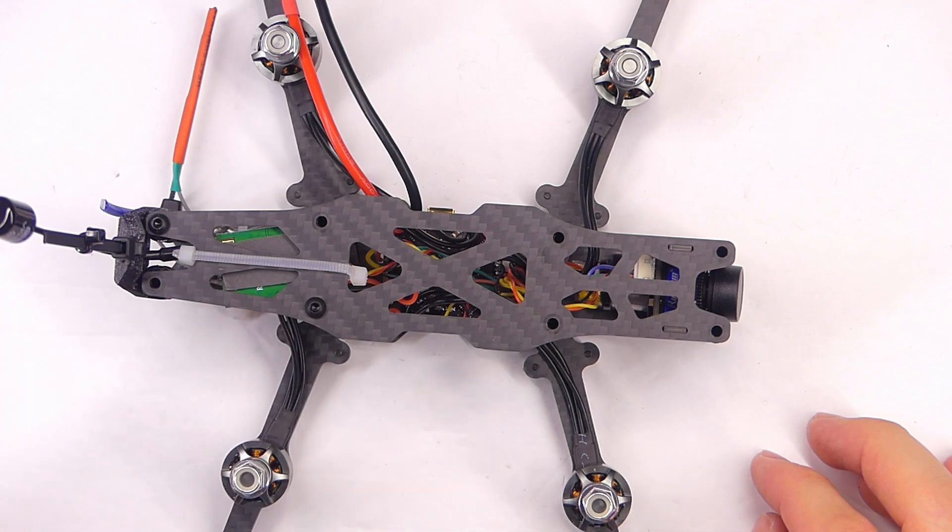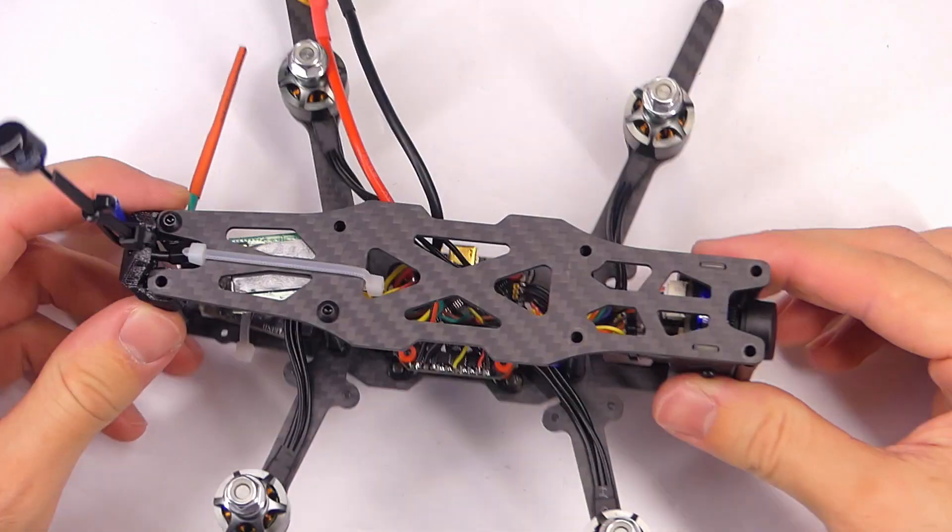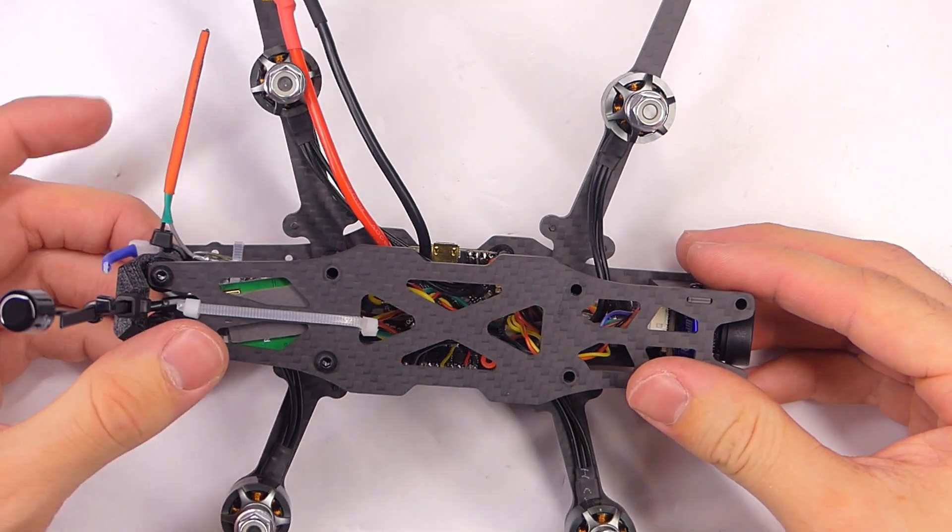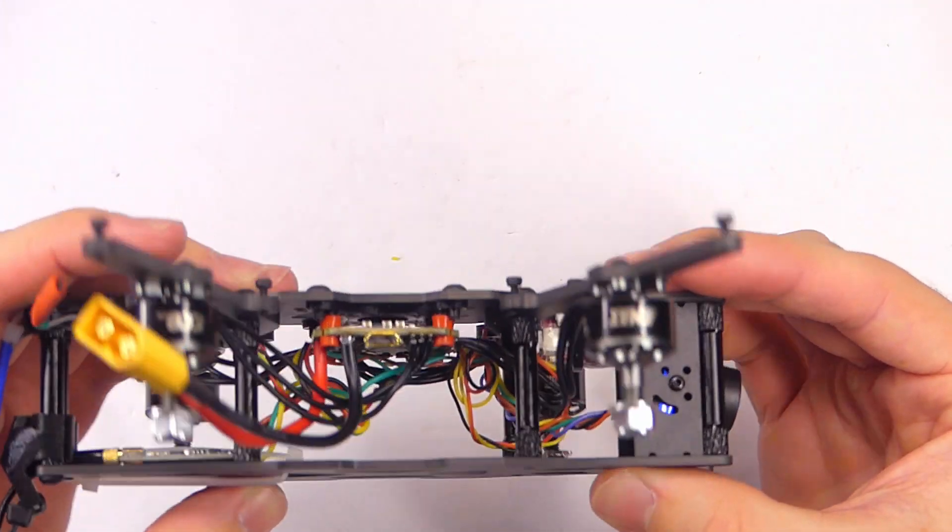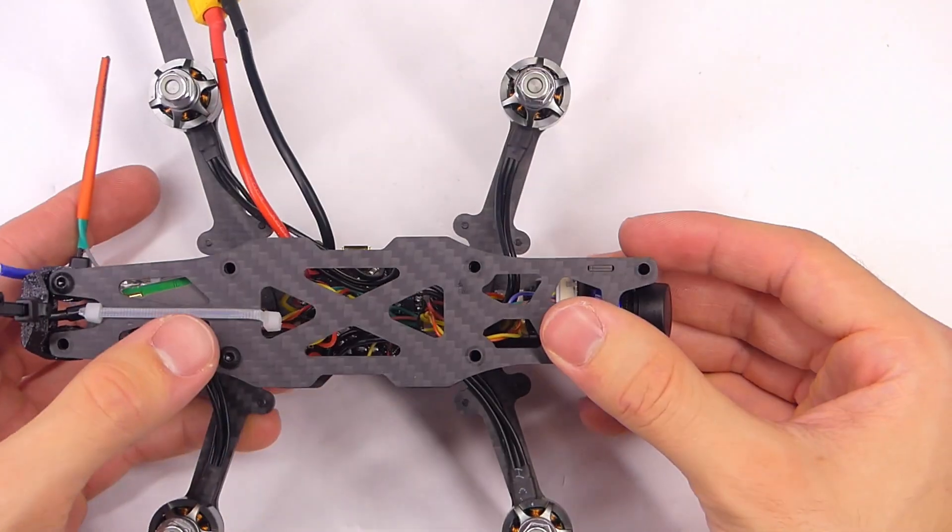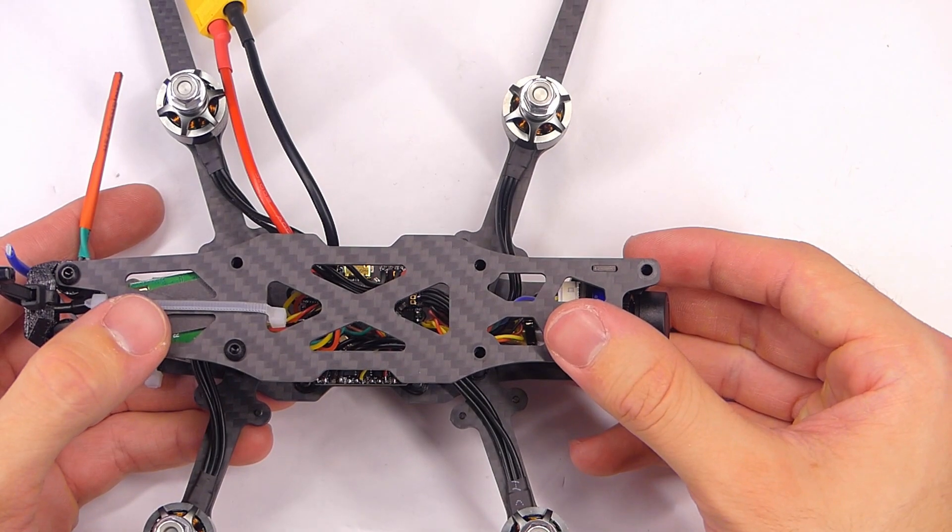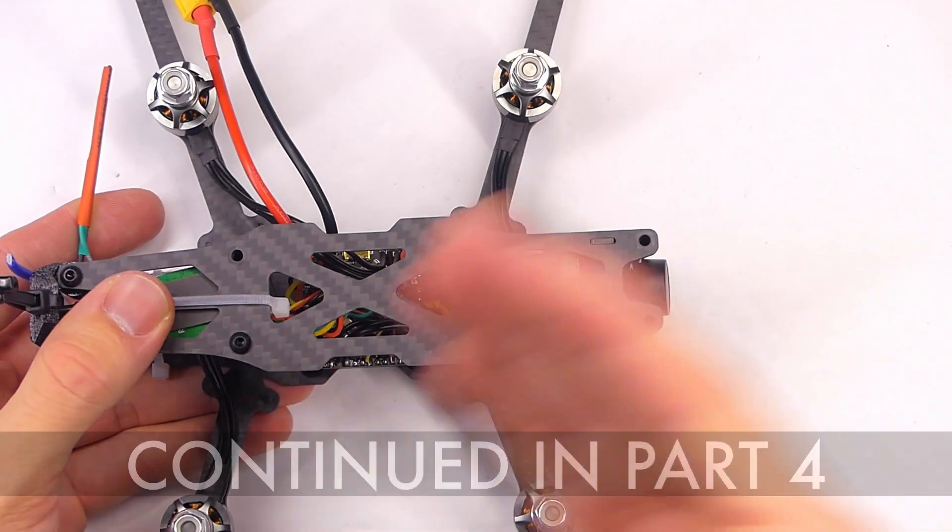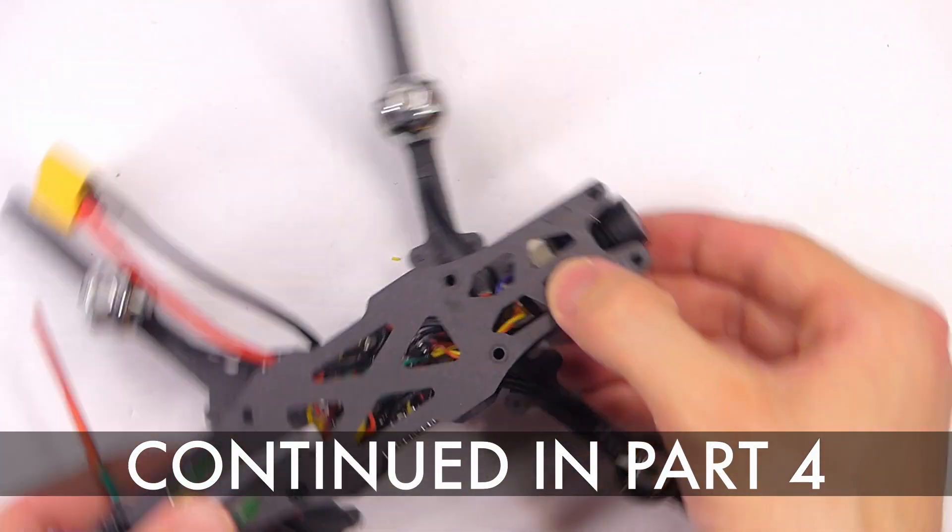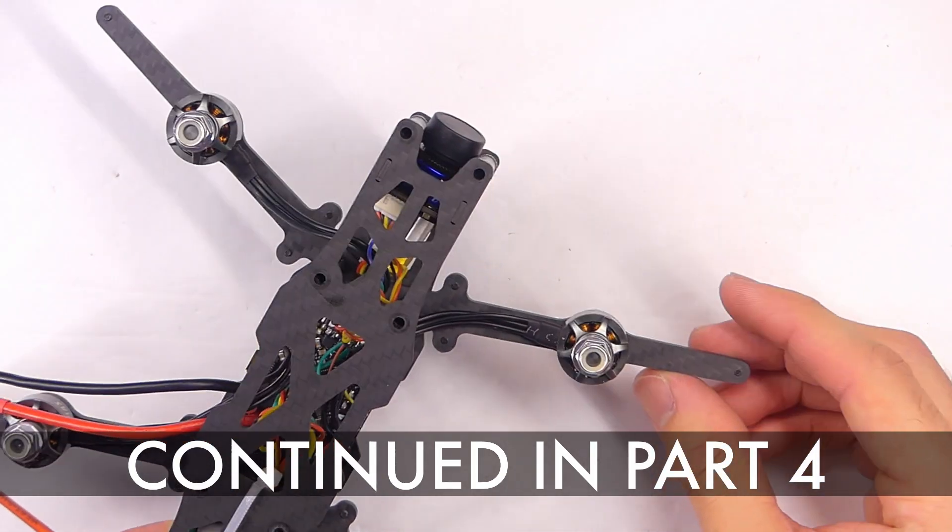Before I put on the ducts, I'm just going to test run everything on Betaflight and do all that stuff. And we'll have to configure Betaflight and configure the motors because what we need to do, fortunately, we don't need to remap the motors, but we do need to rotate the board. So that's going to be a very important step.